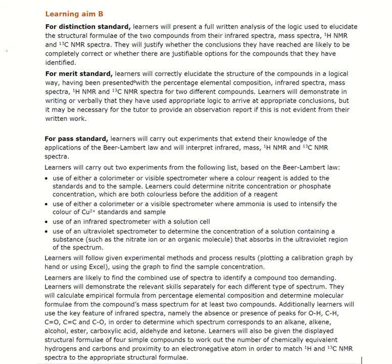For the criteria, we've got two pass criteria: P3 and P4. We've got one merit, which is M3, and one distinction, which is D2. I'll start off by picking out the pass criteria. Obviously, it's fairly straightforward to say that all of this is the merit and likewise the distinction.